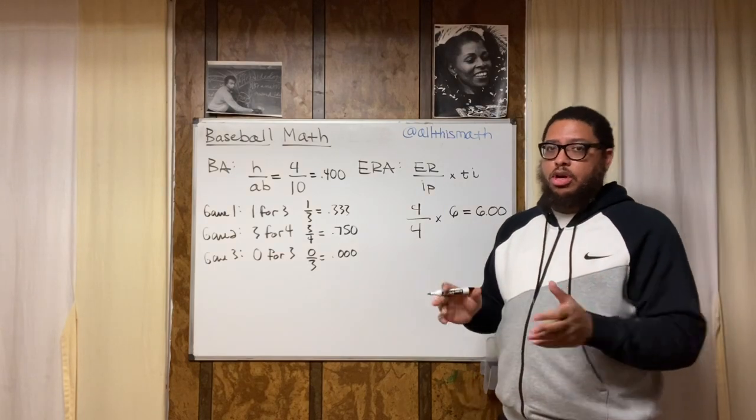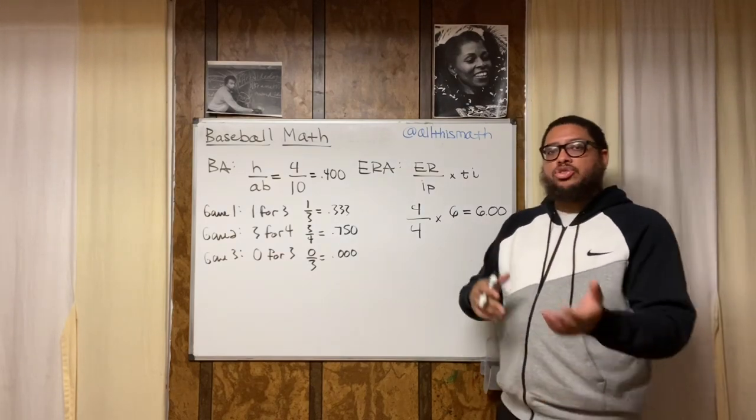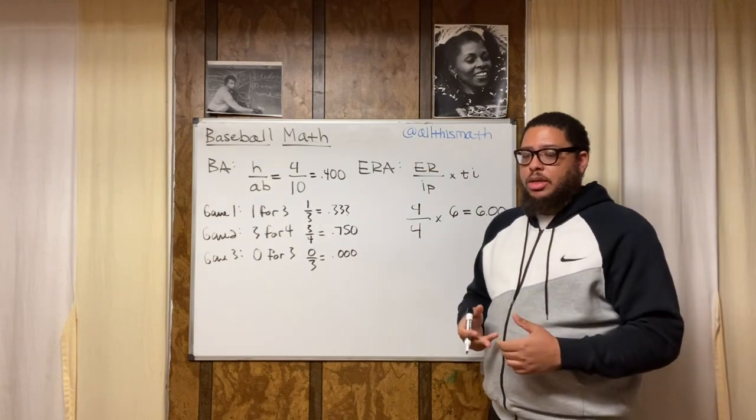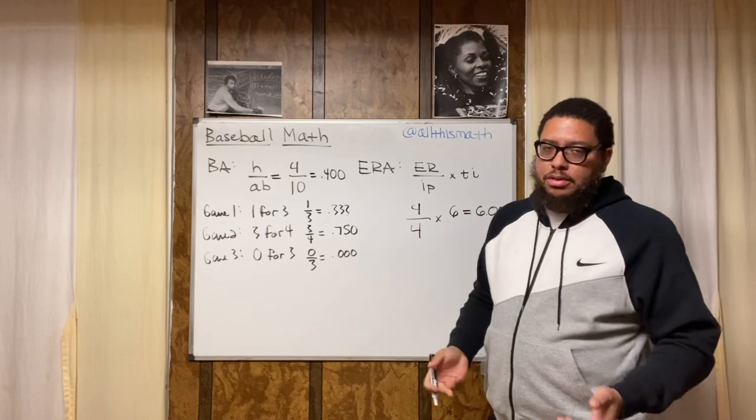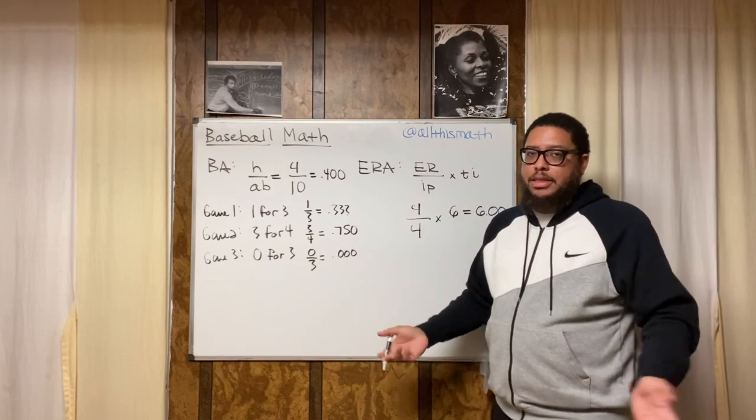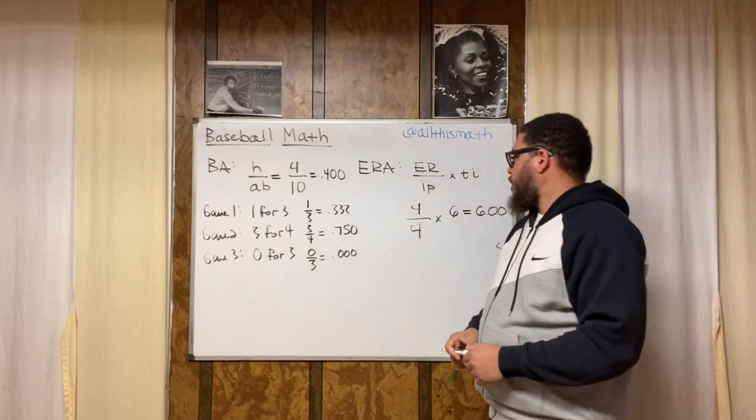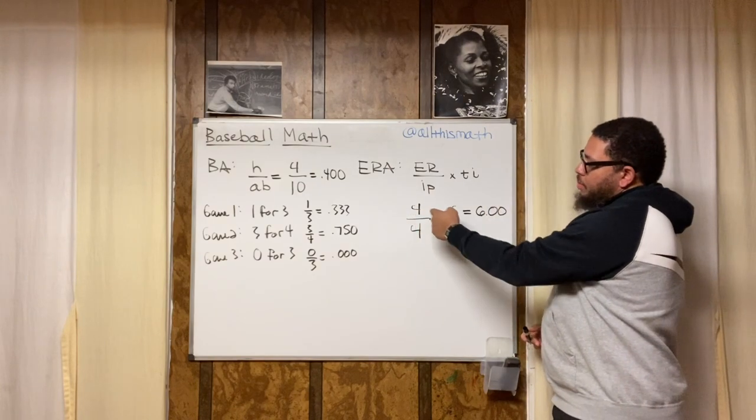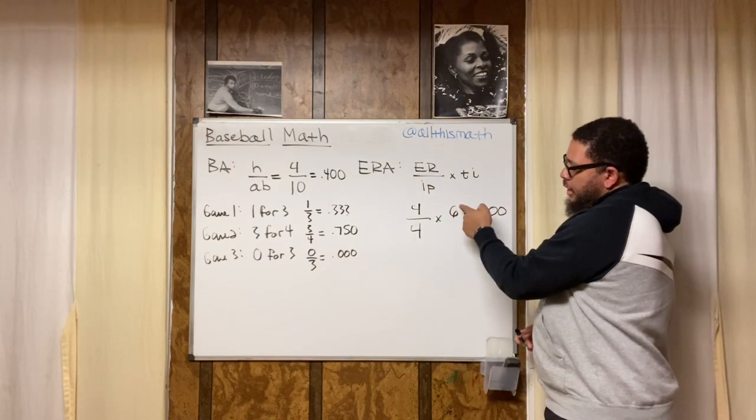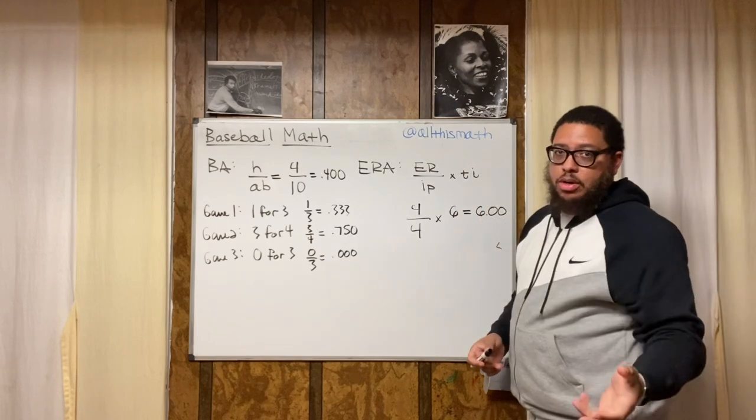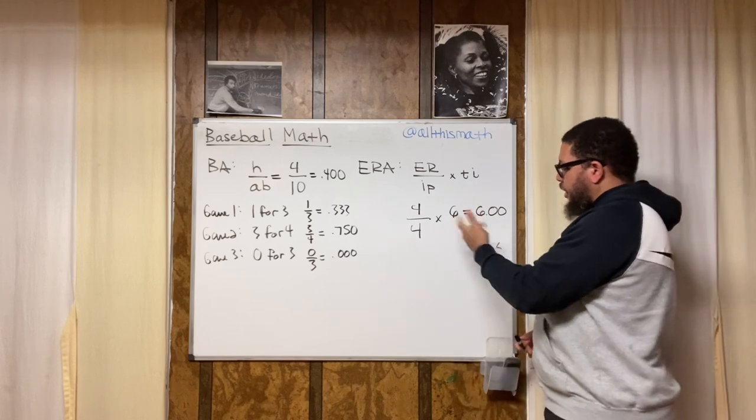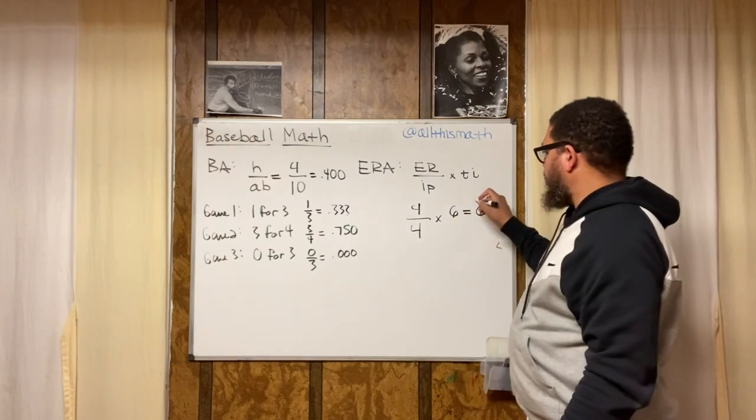But hopefully you've got a strong defense behind you that does what they're supposed to do so you're not giving up a lot of unearned runs. Because if you're giving up a lot of unearned runs, your team might still be losing anyway. So anyway, the other way we could have did this was you could multiply straight across. You could do four times six and get 24. And then from the 24, you divide that by four. 24 divided by four is still six. So that's an ERA of six either way.